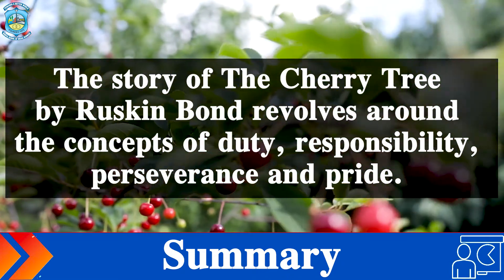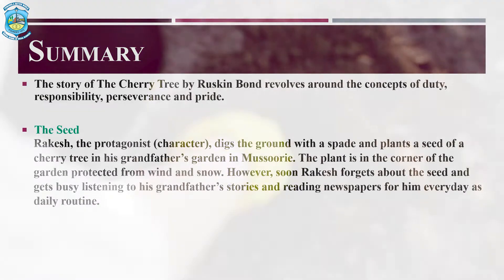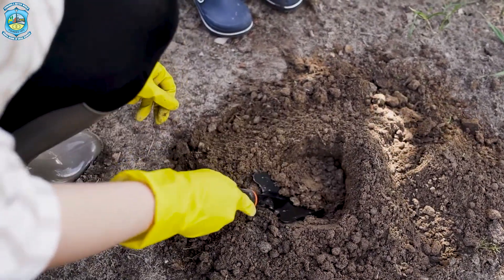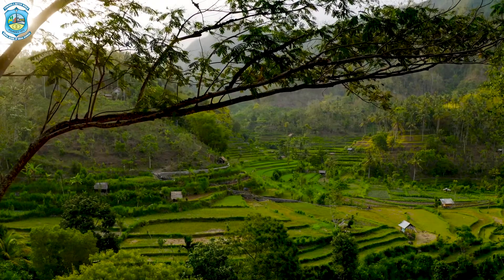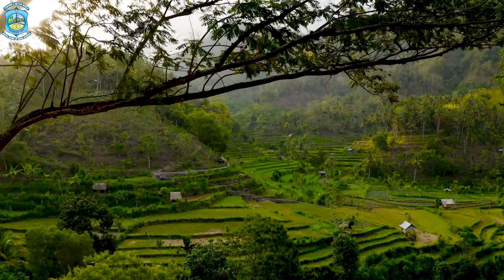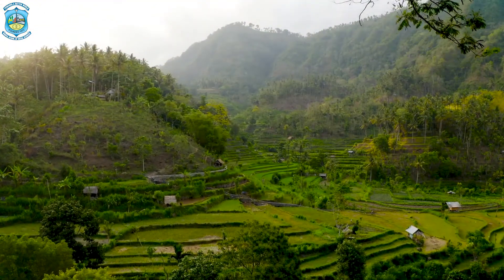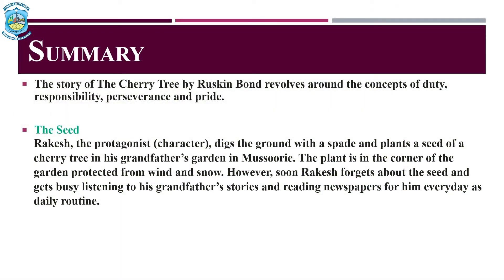We are looking at one of the protagonists named Rakesh who digs the ground with a spade and plants a seed of a cherry tree at his grandfather's garden in Missouri. The plant is in the corner of the garden and is protected from wind and snow. However, soon Rakesh forgets about the seed and becomes extremely busy listening to stories and reading newspapers along with his grandfather every morning.